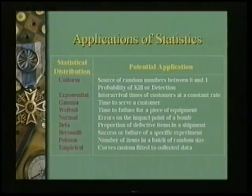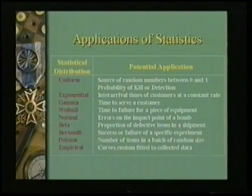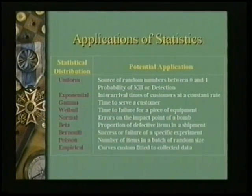If you're worried about writing statistical distributions or random number selection software, simulation-specific languages handle that. Statistical distributions useful for particular situations have been established through hundreds of research studies. For example, inter-arrival times between customers at a barber shop are distributed exponentially, while service times at a store are distributed with a gamma distribution. A statistical cookbook or simulation book will tell you when these distributions are useful, giving you a big leg up rather than requiring you to discover the appropriate distribution for each model yourself.